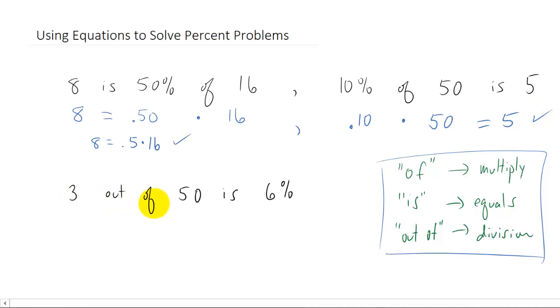And this last one, 3 out of 50. That's going to be 3—'out of' is division. So there's 3 out of 50. 'Is' is an equal sign. 6%. 6% if we move the decimal place twice is written as .06. And that's a true statement as well. 3 divided by 50 is .06.